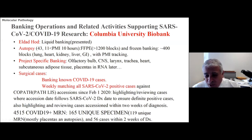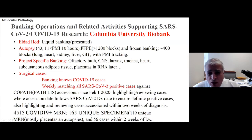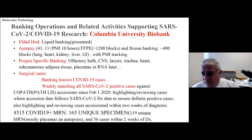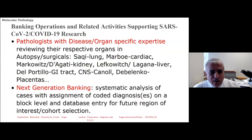Starting with some 4,500 COVID-19 MRNs from swabs, we identified about 165 unique specimens from 119 unique patients. They're mostly placentas or autopsies included in the COPATH information system, but there are a few surgical cases that may be useful for research — with the benefit of being procured and stabilized at a very early date, so ischemic time is quite short. There are 56 cases we identified within two weeks of a COVID-19 diagnosis, so some may have been positive. Some accessions may also be COVID-19 positive but not yet tested, which could be explored subsequently.